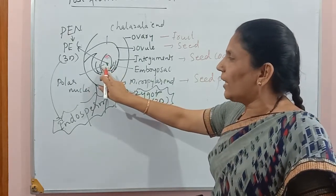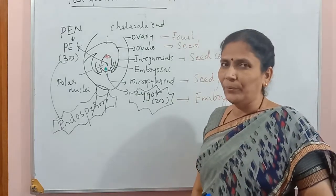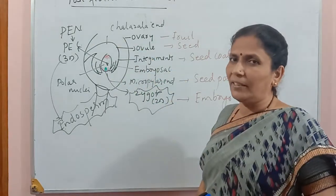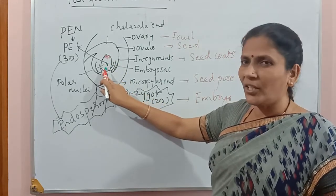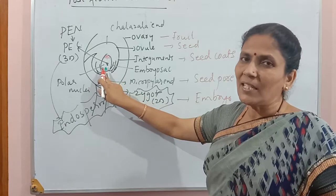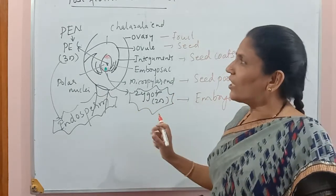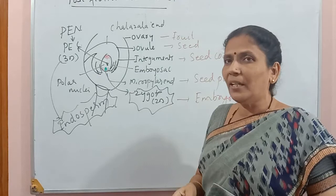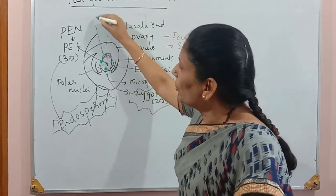The egg after fertilization becomes a zygote and in time will turn into the embryo. The integuments are later formed as the seed coat. Towards the chalazal end, the three antipodals are degenerating after fertilization. There are two synergids — one synergid ruptures as soon as the pollen tube enters, and the other is also degenerating simultaneously. These are the changes taking place after fertilization, which we call post-fertilization changes.